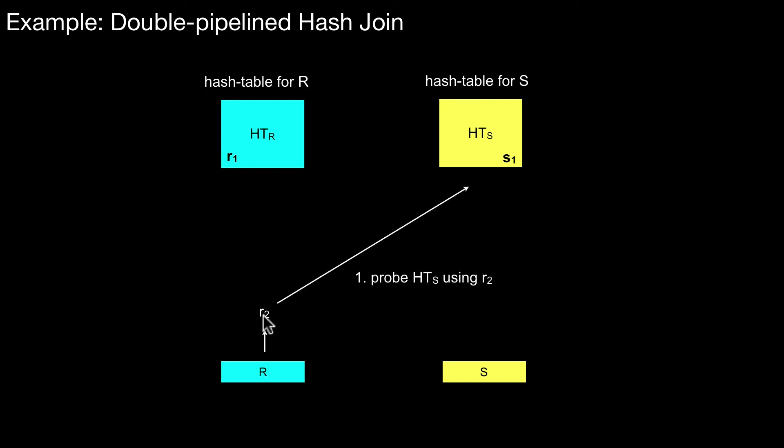Maybe here's the second tuple from R. Again we probe against that hash table. Maybe we have a join result. It depends on whether this is returned by querying this hash table with this specific value. Again we insert it and so forth. That is double pipeline hash join.